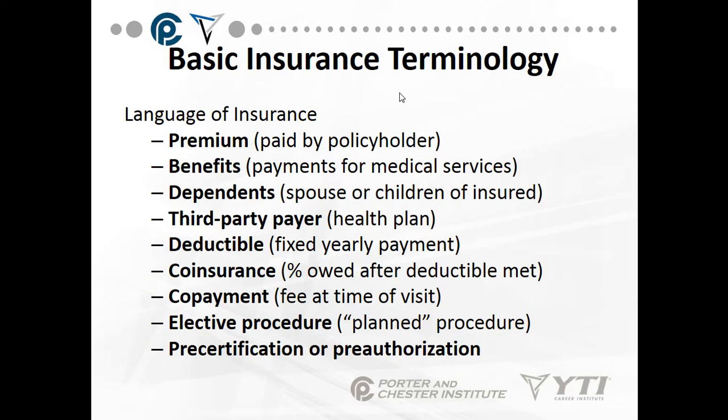So if your deductible is $1,000 a year and you've met it by the third month, now your co-insurance applies. Say the office visit is $100 — your co-insurance is 20% of every type of service you have, so you will pay 20% of that $100 for the visit.